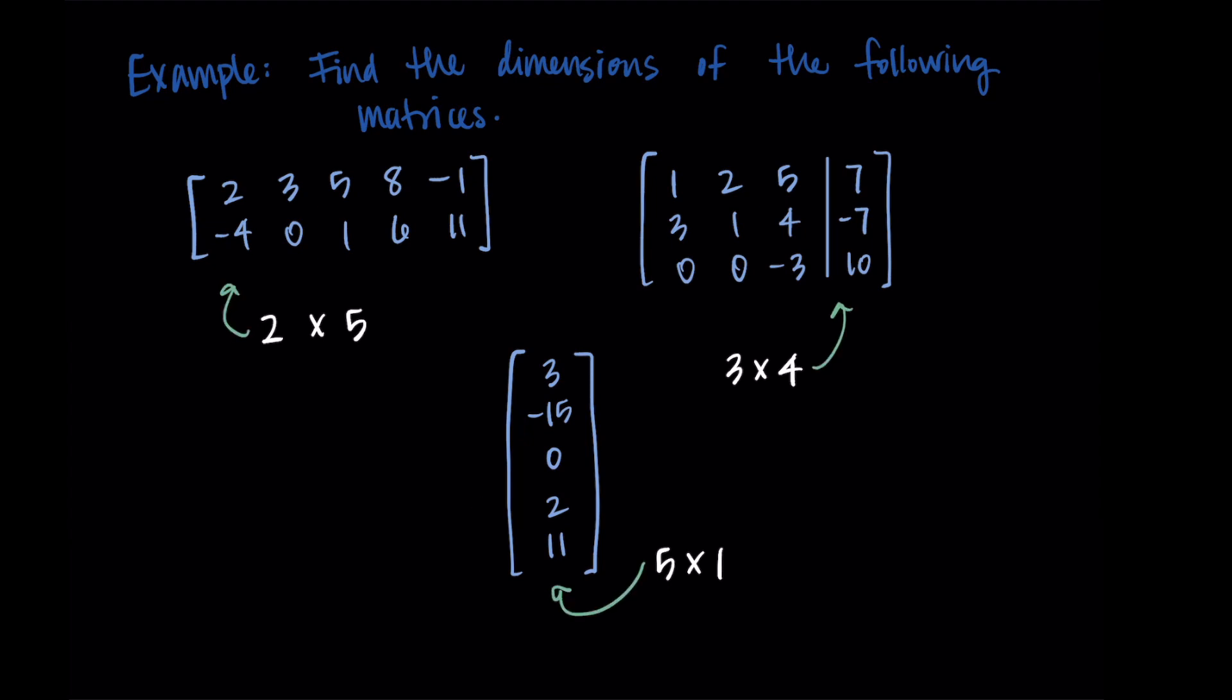The concept itself isn't too complicated. It just does matter that you remember that the rows come first and the columns come second. So we do count down the rows and across the columns and we get our m by n dimensions.